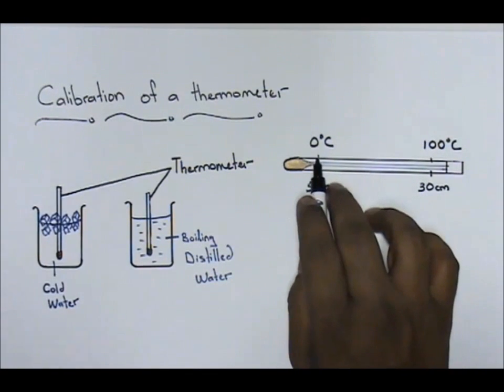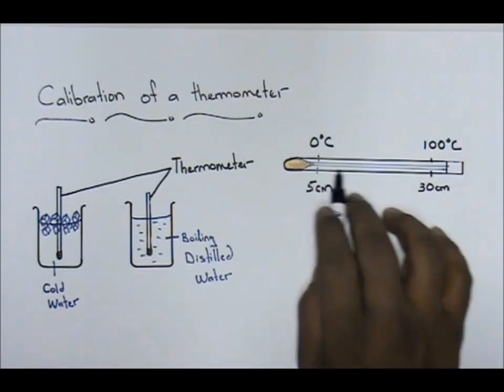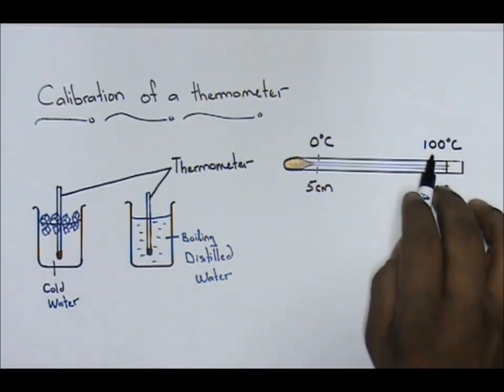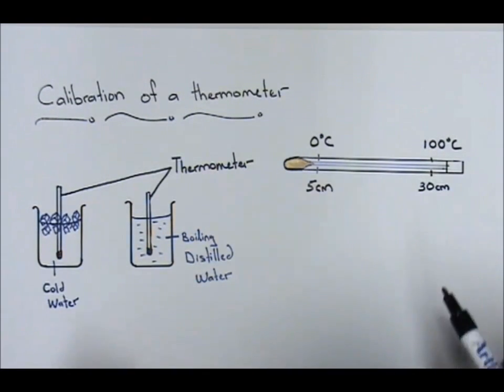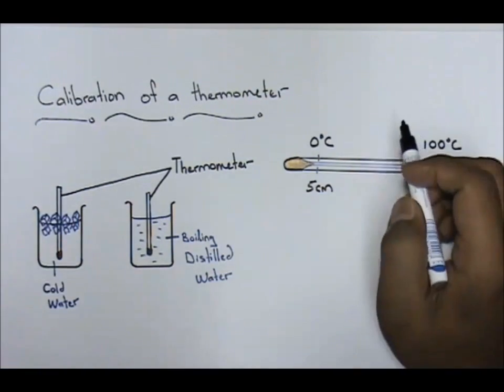Now when it goes at 30 centimeters, because it's boiling distilled water, your temperature will be 100 degree Celsius. When you have your 0 and your 100, you can basically divide this thermometer that does not have a meniscus and do your own meniscus.